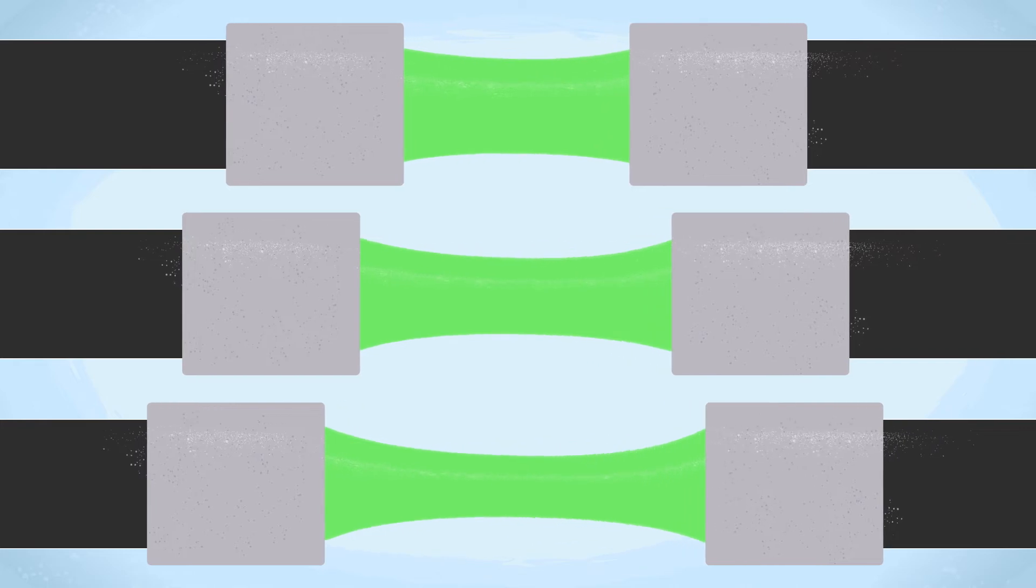However, unexpectedly, when O'Connor simulated faster deformation, all the chains began stretching out uniformly like they would in a normal polymer.